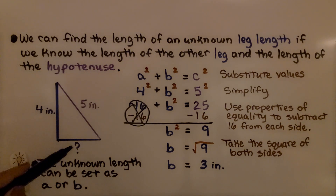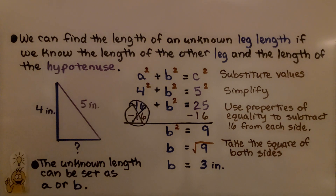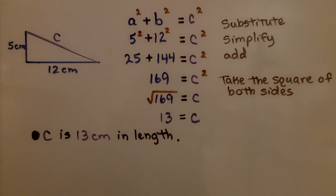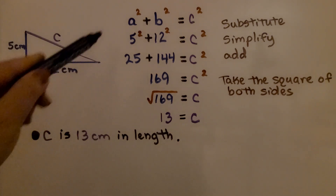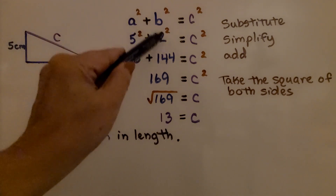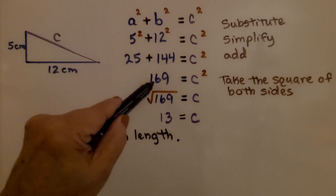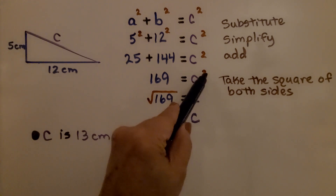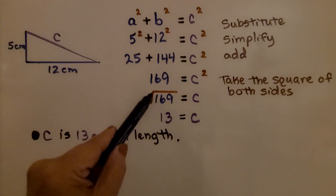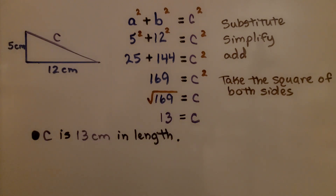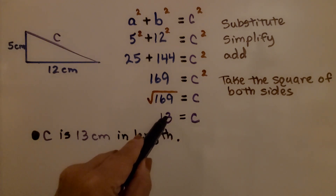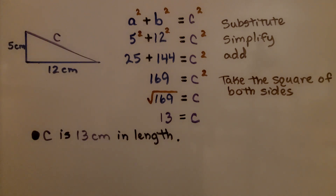Note that I assigned the unknown value to b, but I could have used a — the unknown leg can be set as either a or b and we'll still get the same answer. Now a slightly harder example: a right triangle with legs of 5 cm and 12 cm. Substituting: 5² + 12² = c². Simplifying, 5 × 5 = 25 and 12 × 12 = 144. Adding gives 169 = c². Taking the square root, since 13 × 13 = 169, c = 13 centimeters.